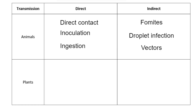Now let's look at how plant diseases can be transmitted. For direct transmission in plants, it is mostly just direct contact — when the leaves of an infected plant come into contact with the leaves of a healthy plant, pathogens can be transferred through that process.